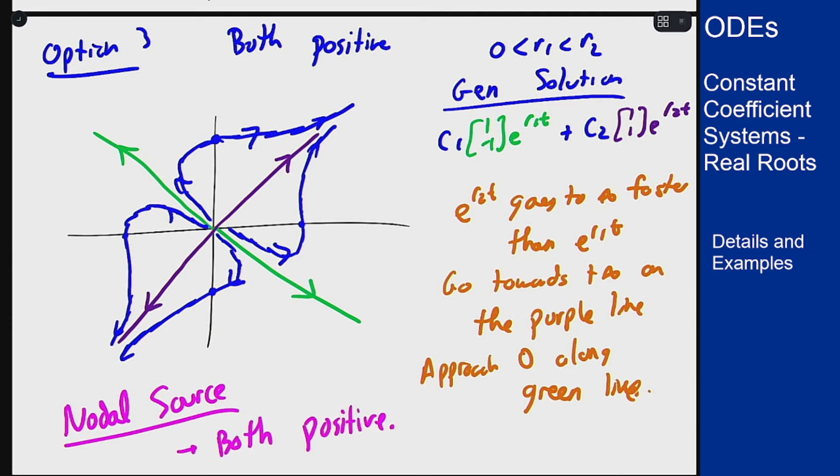Those are the three main options that you're going to get for these real and distinct eigenvalues for these systems. Your picture will look exponentially different for different eigenvalues and eigenvectors, particularly if you have the eigenvectors really close together. It's going to look a little weird the way the curves behave but the idea and the flows are still the same.